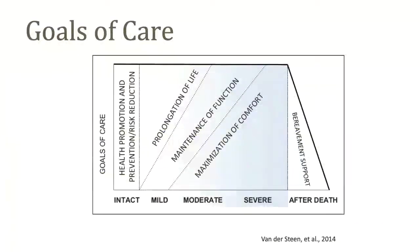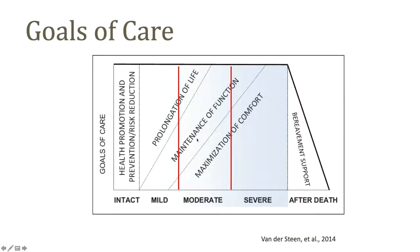Here's a visualization of the goals of care that change throughout the disease course, and more than one goal may apply. In the mild stage, the goals are to prolong life and maintain function. In the moderate stage, our goals are to maintain function and maximize comfort. And in the severe stage, the primary goal is really about comfort. This is what we're going to spend a lot of time talking about — thinking about ways to promote comfort and quality of life.